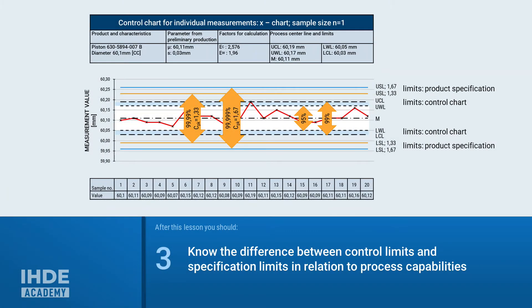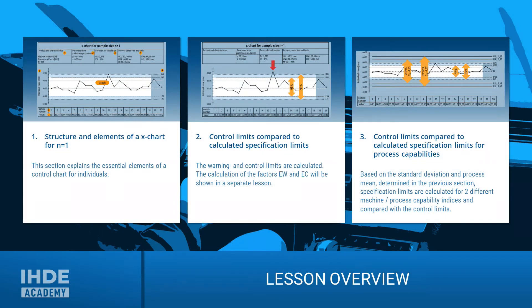You should understand how the warning and control limits differ from the specification limits given the process capability requirements. This lesson is divided into three chapters. Even if this was already part of the lesson on the general basics of quality control charts, the basics of an X-Chart will be reviewed in the first chapter. In the second chapter, we will calculate the warning and control limits. Then, based on the standard deviation and process location, we will calculate specification limits for two different process capability indices and compare them with the control limits.